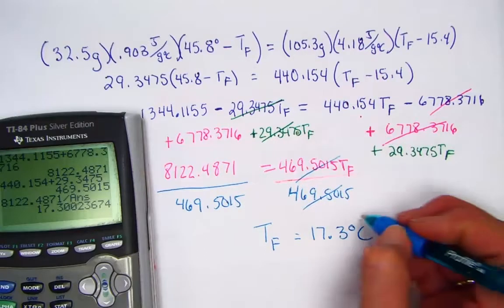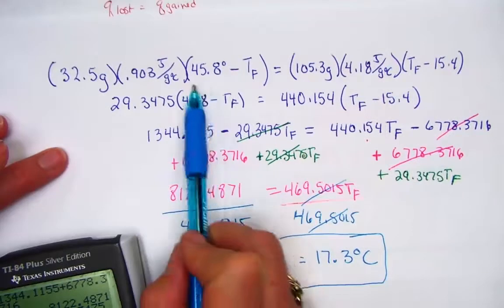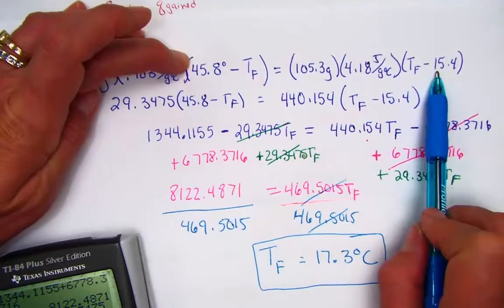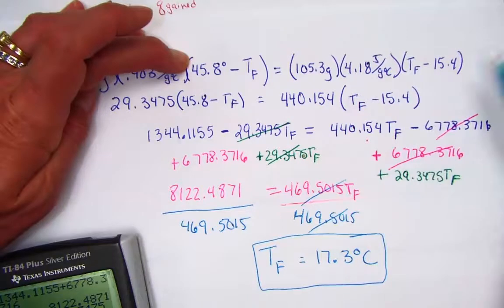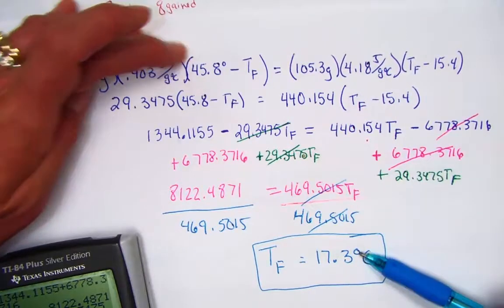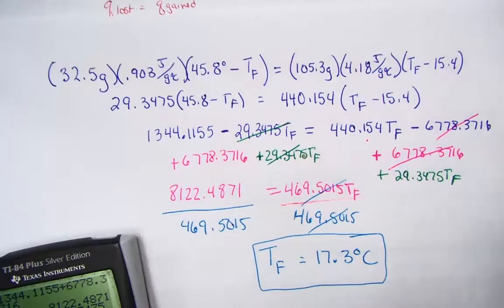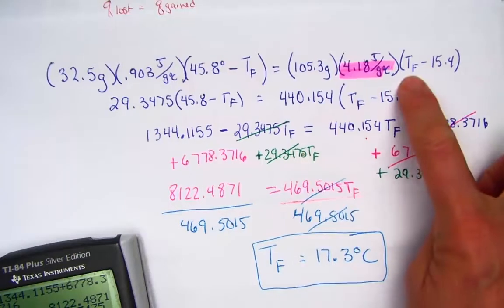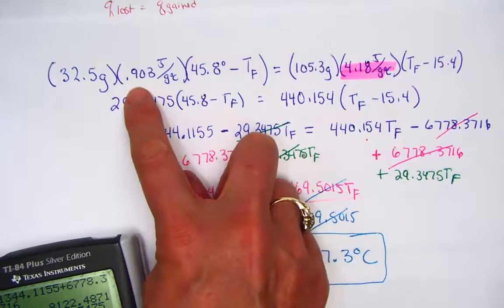Let's see if this number makes sense. The hot piece of aluminum started at 45.8 degrees Celsius. The cold water started at 15.4 degrees Celsius. The water warmed up a little bit. The aluminum cooled down tremendously. And that makes sense because we see that water has a very high specific heat. To warm up water takes an incredible amount of energy.